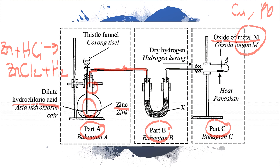The hydrogen gas goes to Part B, where there is a U-tube containing X. X is anhydrous calcium chloride, whose function is to absorb moisture from the hydrogen gas — to dry the hydrogen gas.